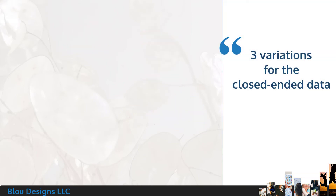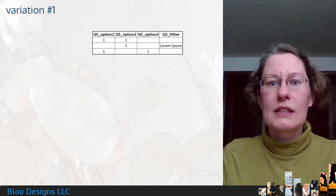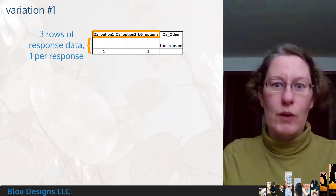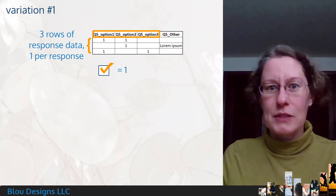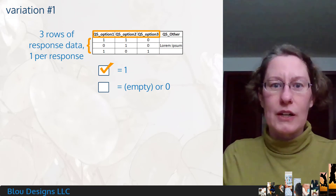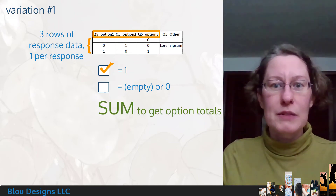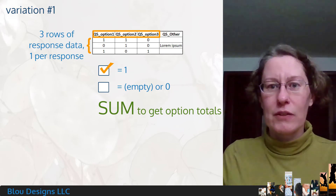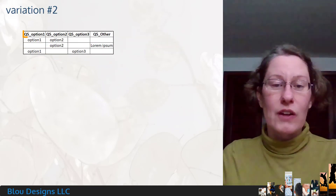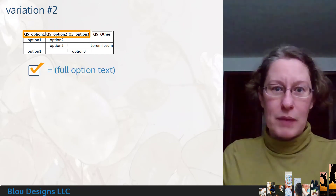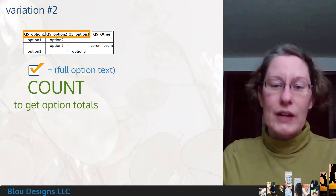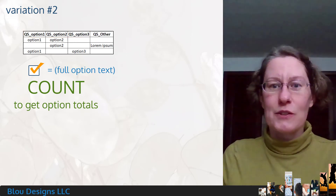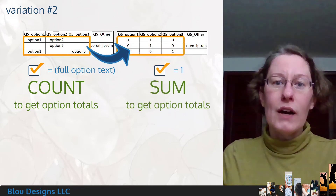There are three main variations for how the closed-ended option data might appear in spreadsheet view. The first variation lists the question's option text as the column headers, with each subsequent row representing a single respondent's response. Checked checkboxes will be indicated by the digit 1; unchecked checkboxes will either be blank or filled with a zero. All you need to do is add the numbers to figure out how many respondents selected that option. The second variation also lists the option text as column headers, but checked checkboxes are indicated by the full option text. To tally this, you'll count filled or non-blank cells, and depending on your analysis, you may need to replace those text strings with the digit 1 wherever there was a checked option.